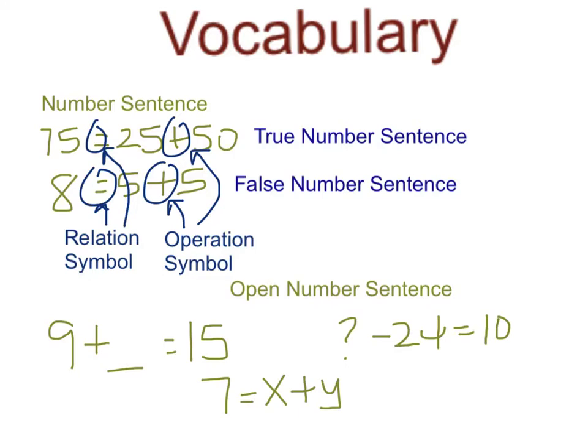There is a third kind of number sentence, and it's called an open number sentence, and it is a number sentence with one or more variables. An open number sentence is neither true nor false because there is a variable in there that could make it go either way. In the case of all three of these number sentences, these are the variables. These are letters or symbols that represent a number. We don't know what that number is yet because we haven't solved the problem, which is why it's called a variable.